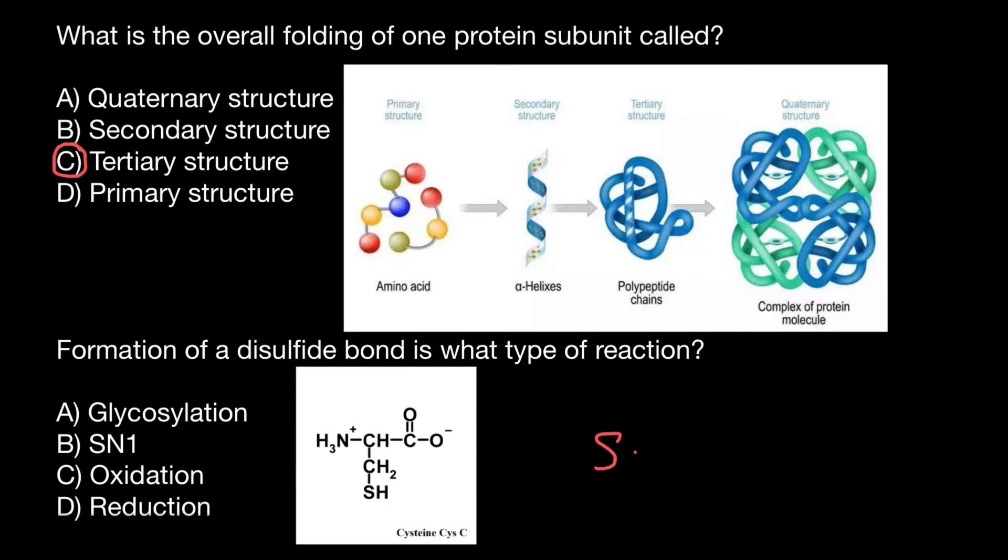We have sulfur and hydrogen on one side and sulfur and hydrogen on the other side. When the disulfide bond forms, the R groups of both cysteines are joined by a covalent bond.